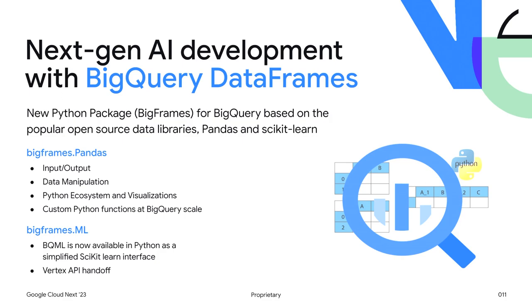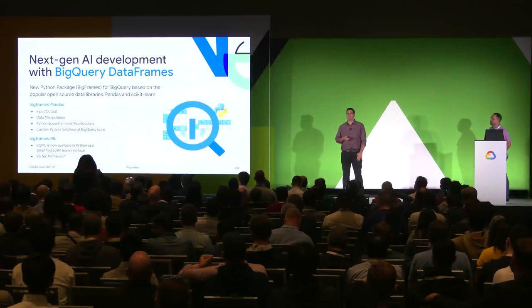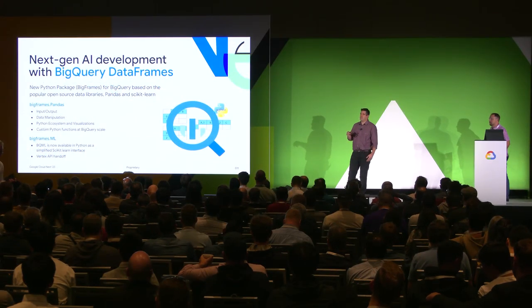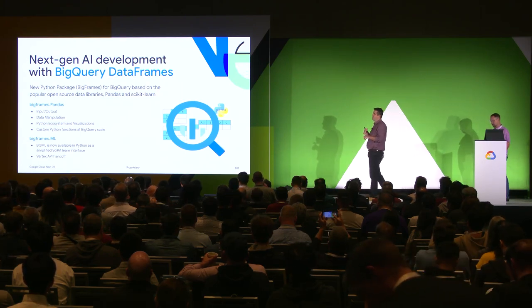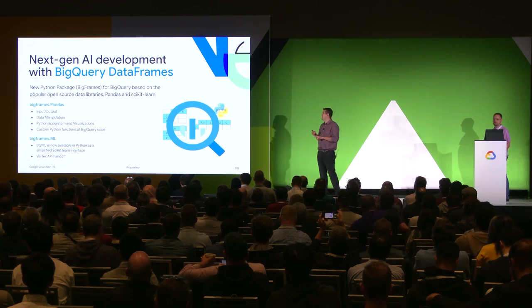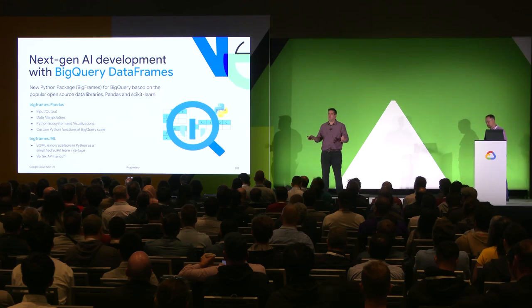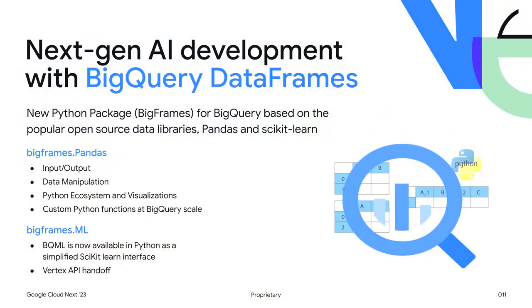The BigFrames package has two different APIs. One is bigframes.pandas — not exactly pandas, but very familiar if you're coming from a pandas background. It's for data exploration: input/output of data, data manipulation including indexes and sorting, access to the Python ecosystem for visualizations like Matplotlib and Seaborn, and the ability to write custom Python and deploy it back into BigQuery to run at scale on BigQuery data.